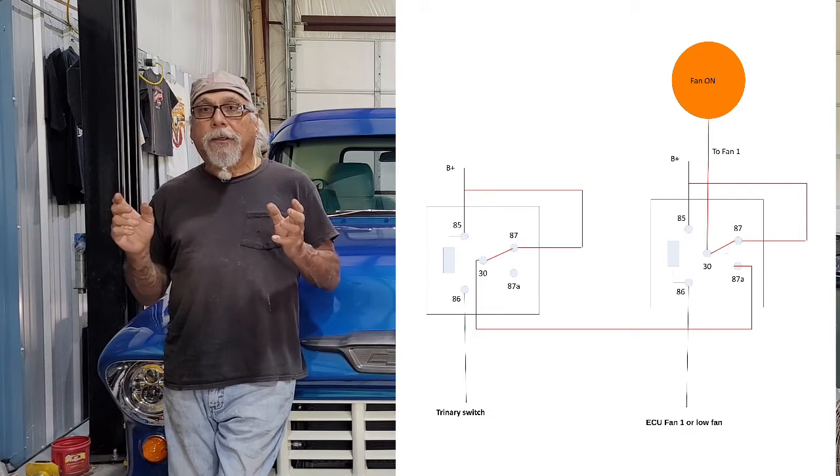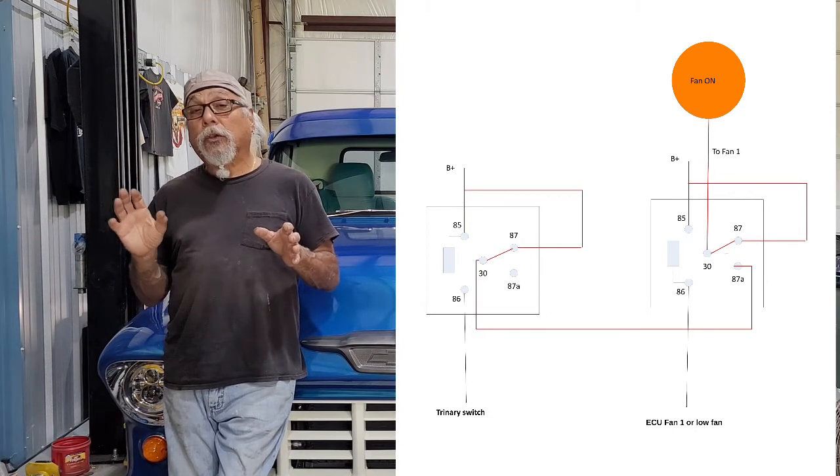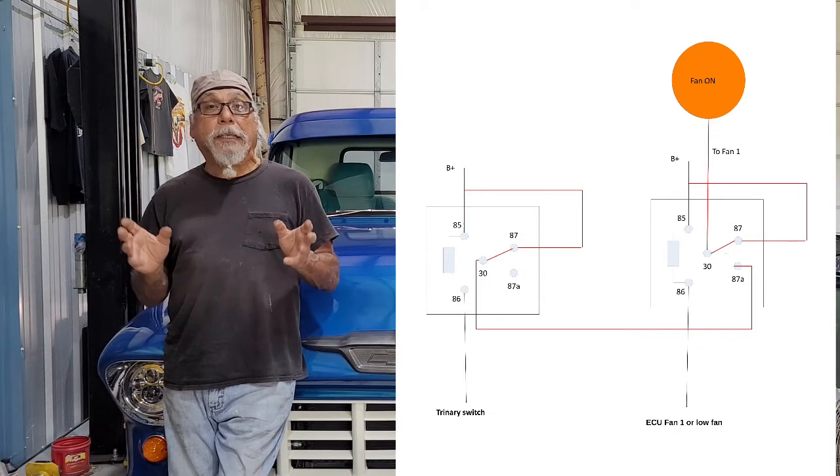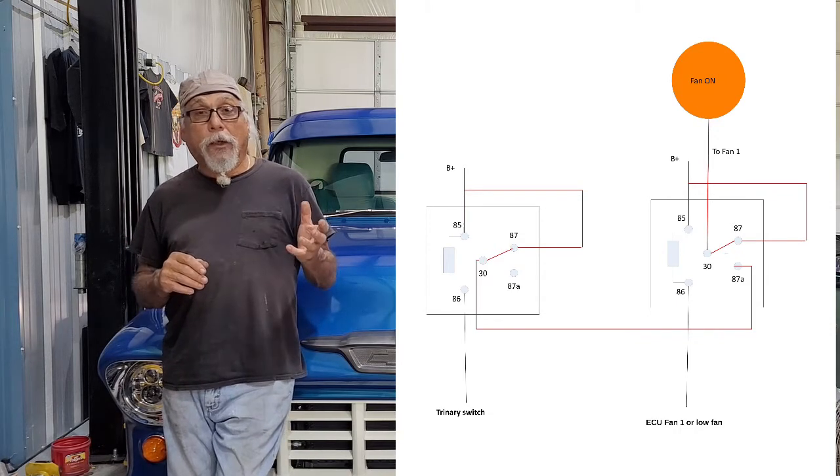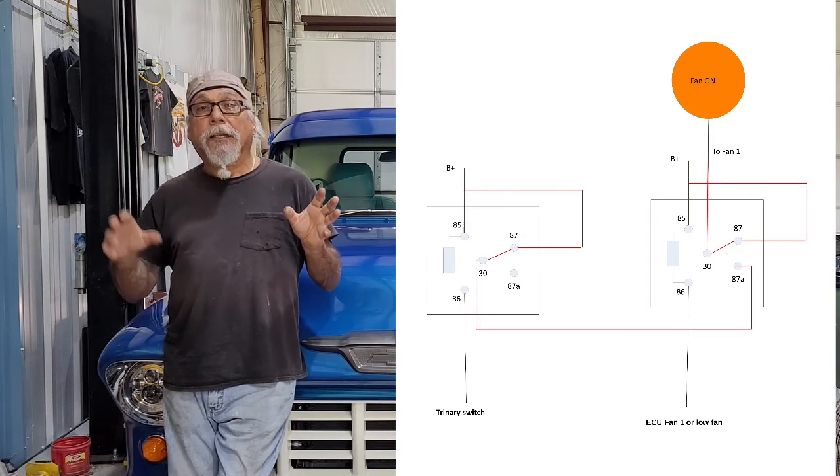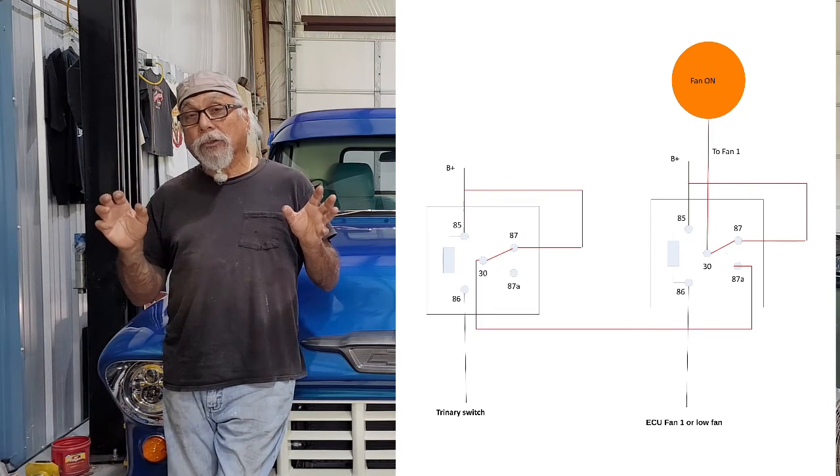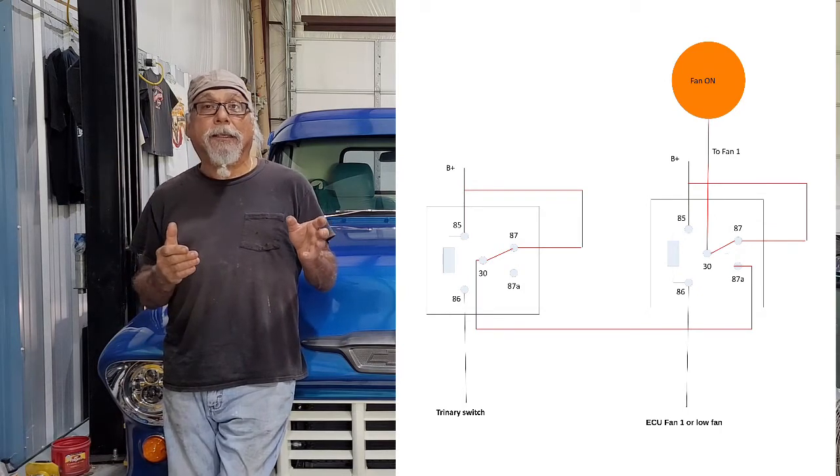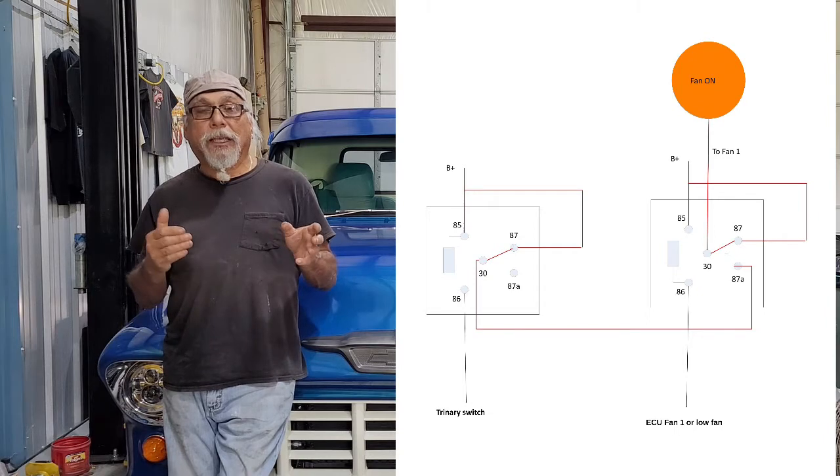This way both relays will turn the fan on when needed. And if it's already on through fan one through the ECU and the trinary switch turns on, it's not going to cause a problem because it's just going to send power to a pin that's not connected.